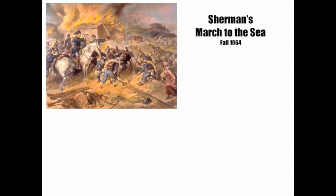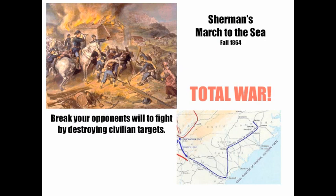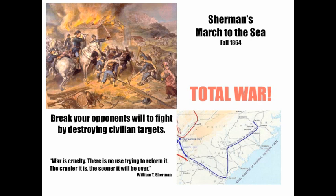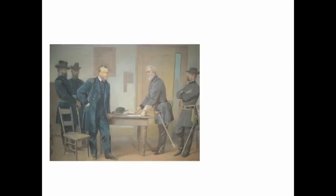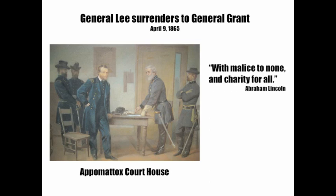The last straw was William Tecumseh Sherman's March to the Sea in the fall of 1864. He brought total war to the South — break your opponent's will to fight by destroying civilian targets. The South had had enough. Sherman said, 'War is cruelty. There is no use trying to reform it. The crueler it is, the sooner it will be over.' Ulysses S. Grant received General Lee's surrender on April 9, 1865, meeting at the Appomattox Courthouse, following Lincoln's instruction: with malice to none and charity for all.